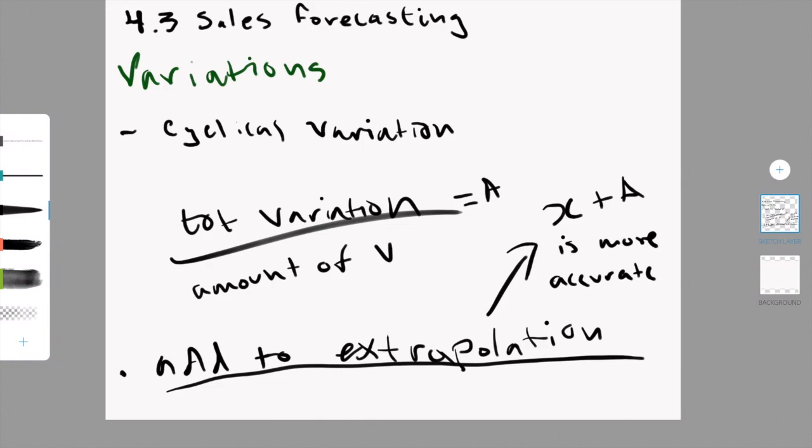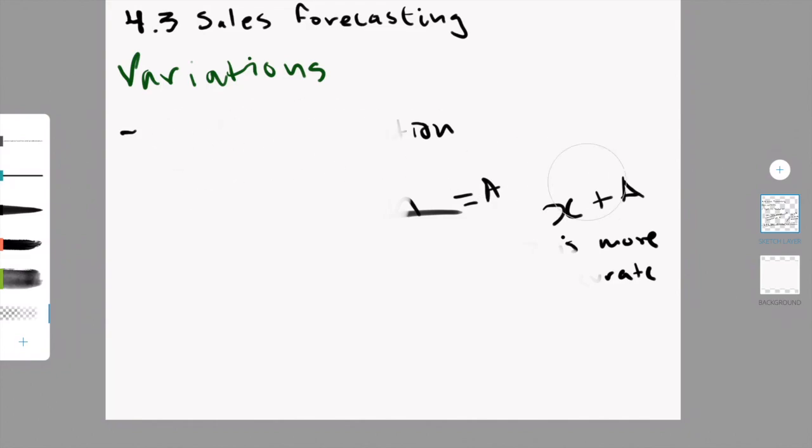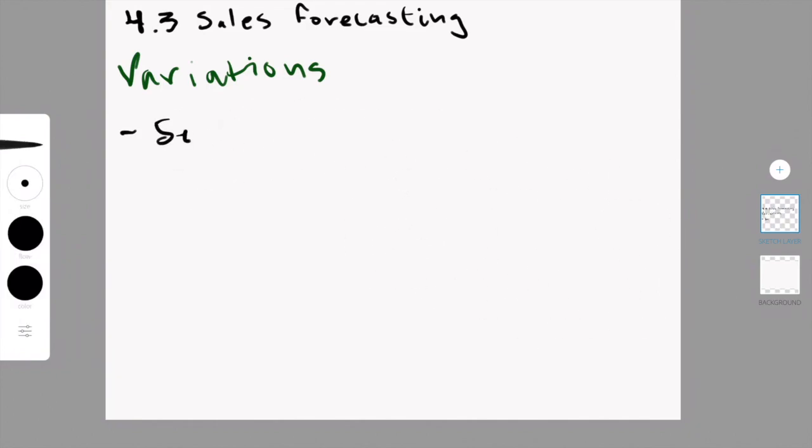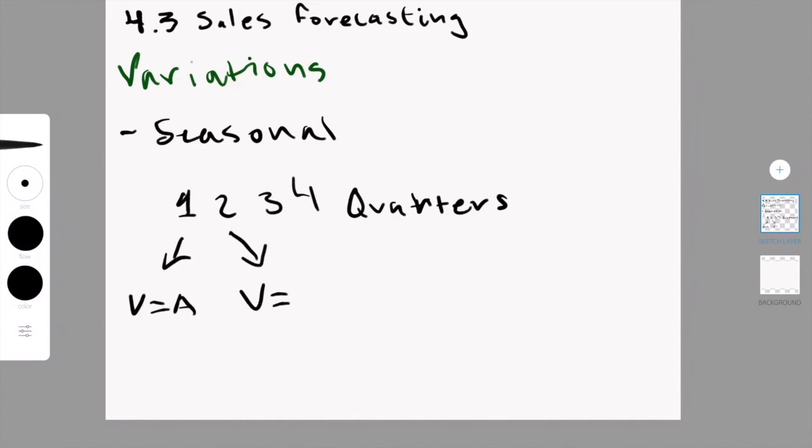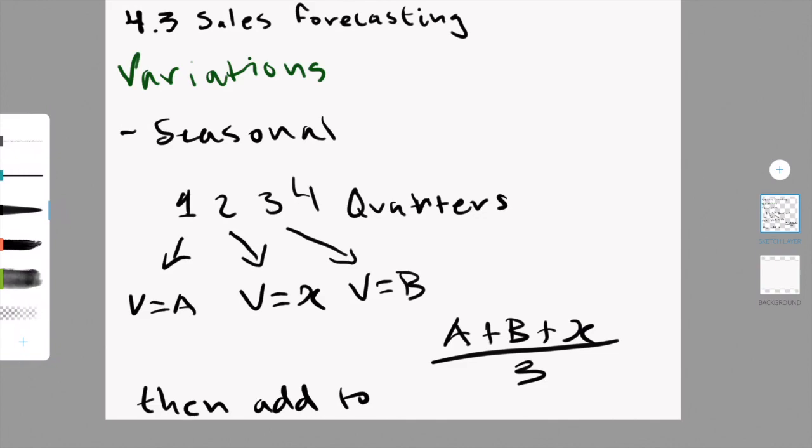Now you have to add this to the extrapolation. You extrapolated, and then you add this to the extrapolation even if it's negative because it will make your prediction more accurate to real life, whether that makes it less since it's a negative number or more if it's a positive number. Now seasonal variations, how you find this is by calculating the average seasonal variation in each quarter. For example, if you take three quarters of a year and the variation for quarter one is A, for quarter two is X, and for quarter three is B, you would take all of those, add them together, and then divide it by three. There you go, you would have your average seasonal variations. Then you can add that to your extrapolated number.